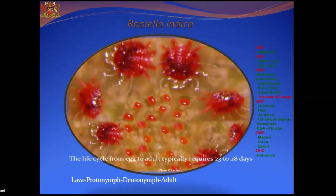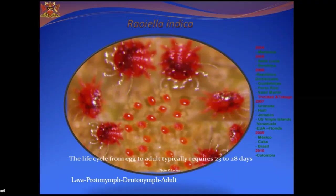Another sap feeder, but belonging to a different class under the arthropods, is Raoiella indica, the red palm mite, which belongs to the class Arachnida and is related to spiders. The red palm mite is an invasive pest that entered the Caribbean in 2004 in Martinique; in Trinidad it was detected in 2006 and considered an important factor hampering coconut production. The pest had serious consequences for the coconut industry with an estimated 70% yield reduction at that time.